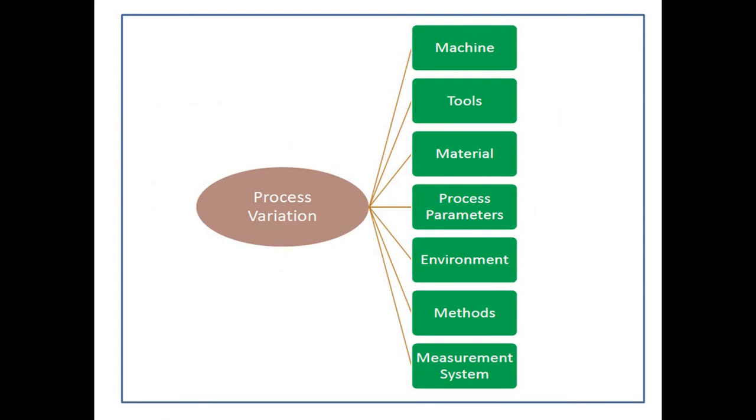Process variation in production occurs due to machine, tools, material, process parameters, environment, methods, and measurement system. Our focus is on process variation due to measurement system.